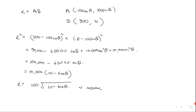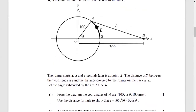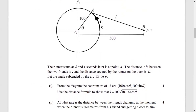The next part asks at what rate is the distance between the friends changing at the moment when the runner is 250 meters from his friend and getting closer. So we want to find dl/dt. At what moment? When l = 250 — all units are in meters.